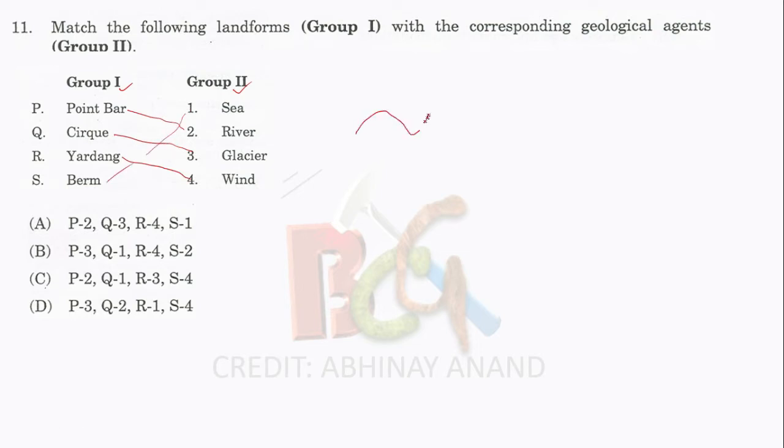Let's quickly look at the diagram of these features. Point bar is like this - if it is a meandering river, when the meandering river erodes, this is the undercut side of a meandering river, and this is where the material gets deposited, known as the slip-off side.